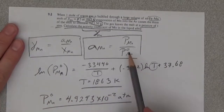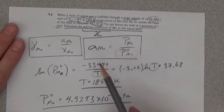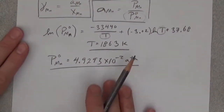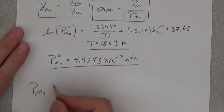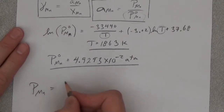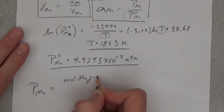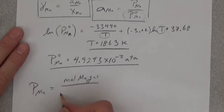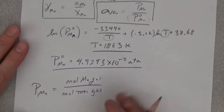So this value will go into our activity expression. Now we need the partial pressure of manganese over our mixture. By definition, that's the mole of manganese gas over total moles of gas. We're told that one mole of argon gas is put through.